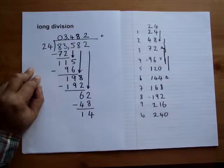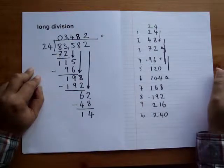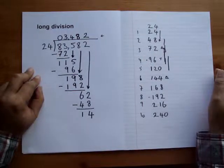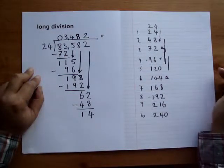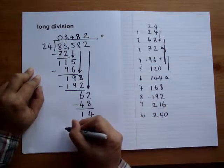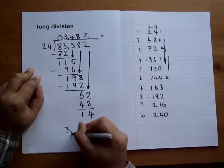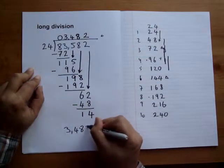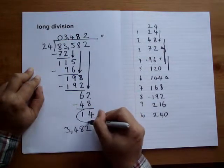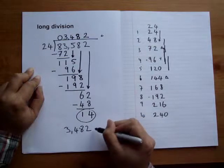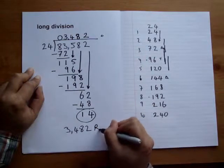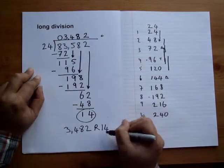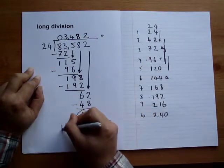So the answer, 83,582 divided by 24, is 3,482 and this is the remainder, so we put an R14, and that is the answer.